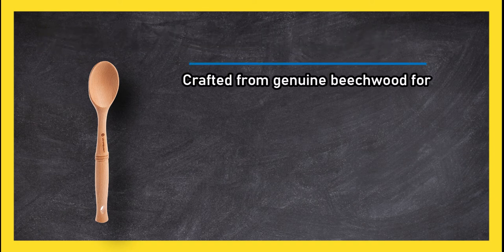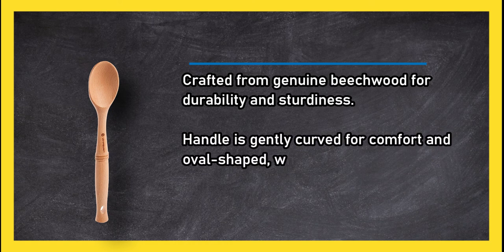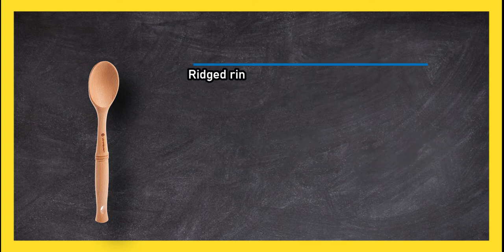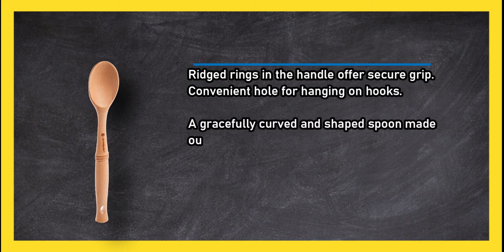Handle is gently curved for comfort and oval shaped, which allows better grip. Ridged rings in the handle offer a secure grip. Convenient hole for hanging on hooks. A gracefully curved and shaped spoon made out of real beech wood from a reputable brand.